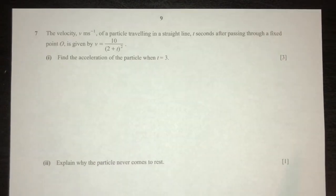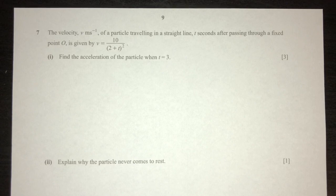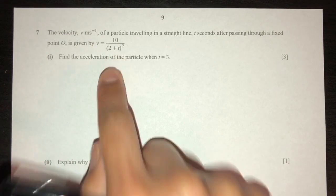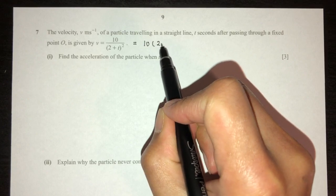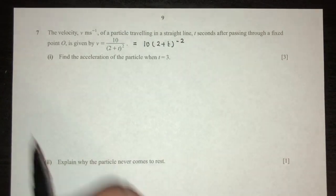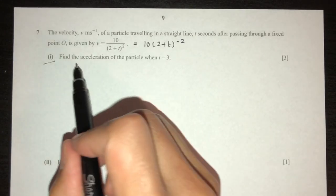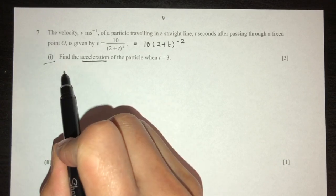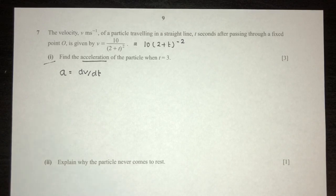Let's move on to question number seven. The velocity v of a particle traveling in a straight line t seconds after passing through fixed point O is given by v = 10(2 + t)^(−2). For part one, find the acceleration when t = 3. You must know that acceleration a = dv/dt.